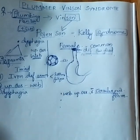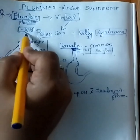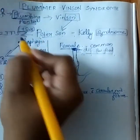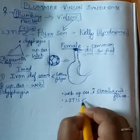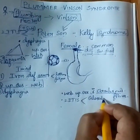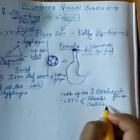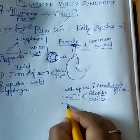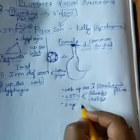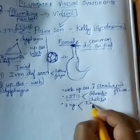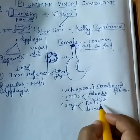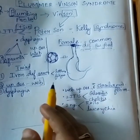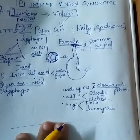The plumber had two sons whose jobs were IT professions — so two 'IT's. One would be glossitis and the other would be chelitis; 'itis' means inflammation. Next, they both had a nice pair of nails: one would be koilonychia and the other leukonychia. That's all about Plummer-Vinson syndrome.